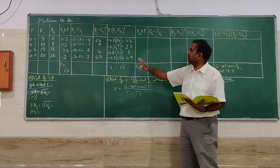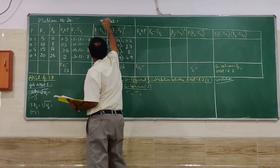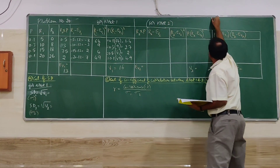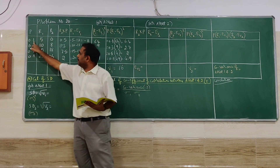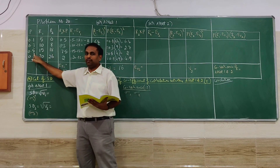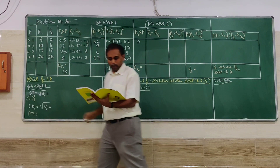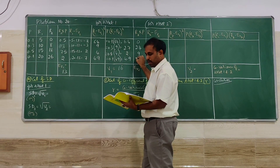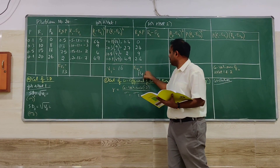Now we go for asset 2. R2 multiplied by P: 0×0.1=0, 8×0.3=2.4, 18×0.5=9, and the last value gives 2.6. Adding these gives the expected return on asset 2 as 14.